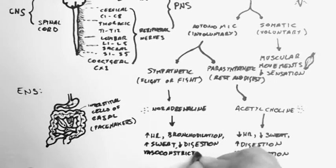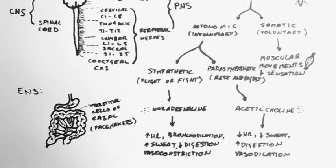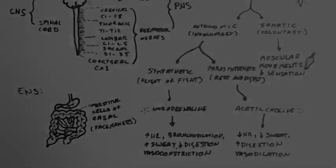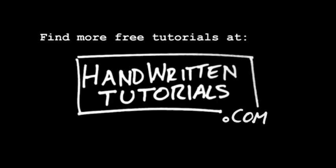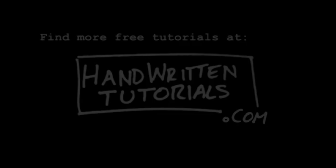And these are functions you need in a flight or fight situation. And that's an overview of the divisions of the nervous system. For more free tutorials, and the PDF for this tutorial, visit www.HandwrittenTutorials.com